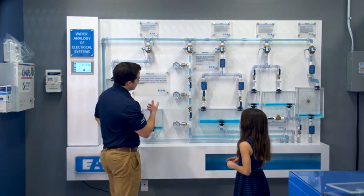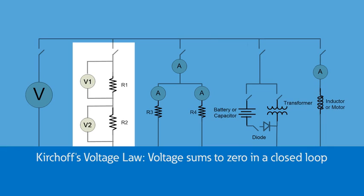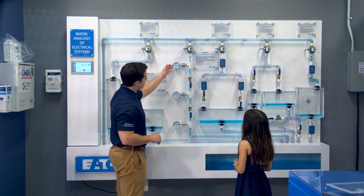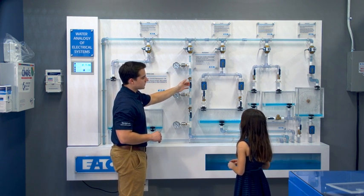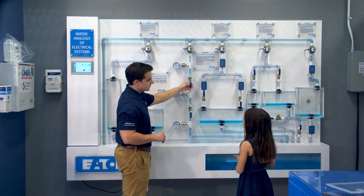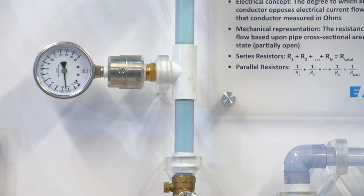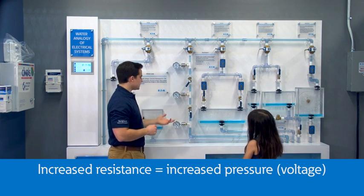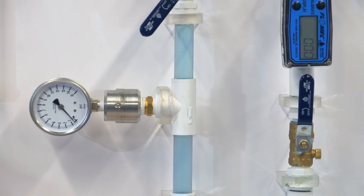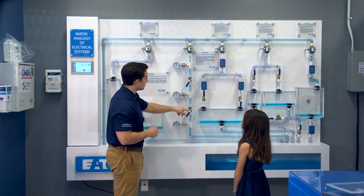This is Kirchhoff's Voltage Law. We have resistors in series. What Kirchhoff's Voltage Law says is the total voltage or pressure drop across all of them will be the sum of the voltage drops across each resistor in series. Right here I have zero pressure drop because this is wide open. If I want to increase this pressure drop, I'd close that switch a little bit, increasing resistance and getting a pressure drop or voltage drop across that resistor. Similarly, downstream I can do the same — increasing resistance downstream actually increases our overall pressure drop as well. This is Kirchhoff's Voltage Law.